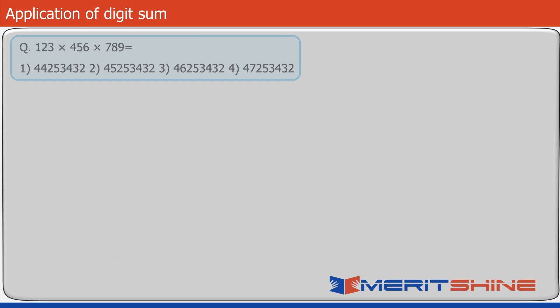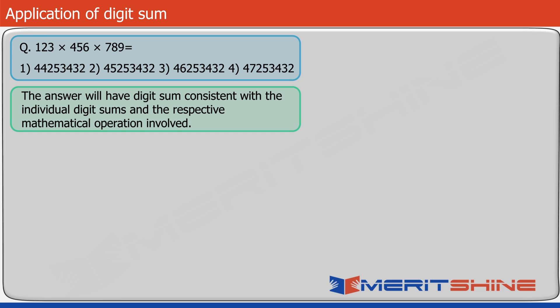Let's now move forward. Try to answer this question. If you look at it, you will see that the unit digit concept has failed. This question will illustrate the concept of digit sum. The answer will have the same digit sum as the individual digit sums combined with the respective mathematical operation. Digit sum is the sum of digits of a given number, added until you get just one digit. If the final digit is 9, the digit sum is 0.